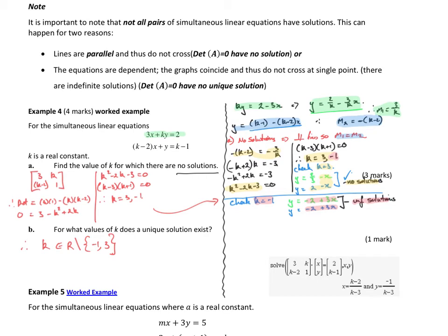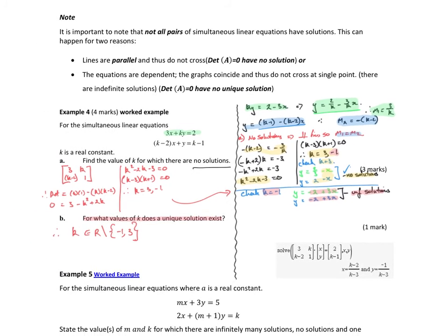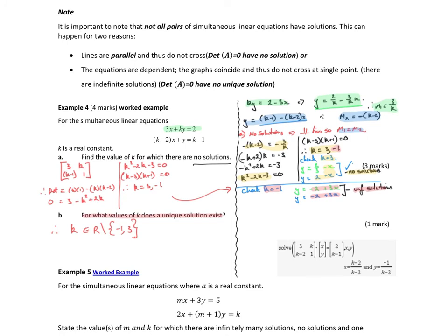Which then leads on to part B: for what values of k does a unique solution exist? Well, k can be anything except for negative 1 and 3. Now, if I want to use a matrix approach to solve that, I set up my matrix. So there's my 3, k, 2 for the first equation. The full equation would be [3, k; (k-2), 1] times [x; y] equals [2; k-1]. So that's the full matrix equation. And you can see that down here on the calculator dump.